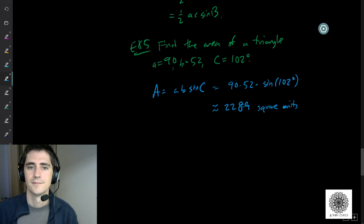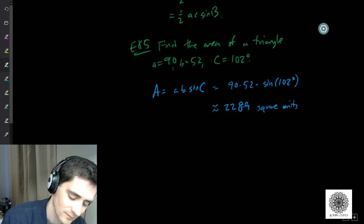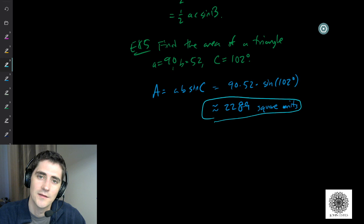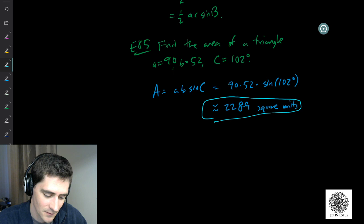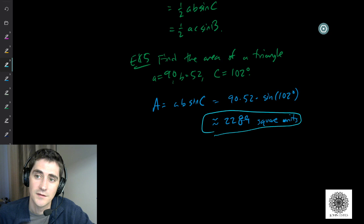This section is not too bad, other than the ambiguous side-side-angle case — but once you see it, it'll make sense. Next week we'll go over section 10.2, which is the last section for this course. If you have any questions, please let me know. Hope you're having a good day and staying healthy — see you next week.